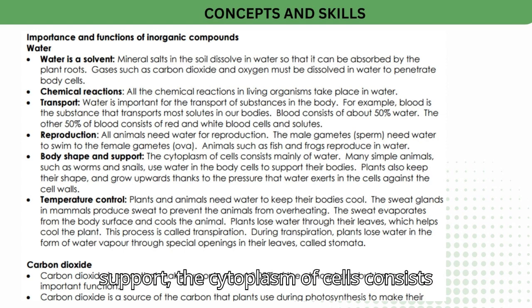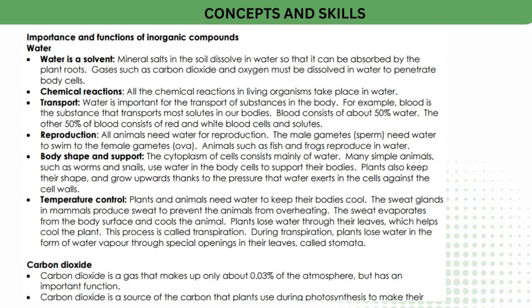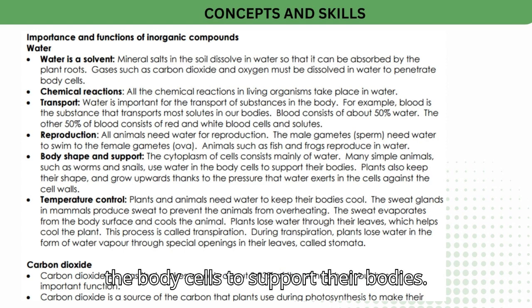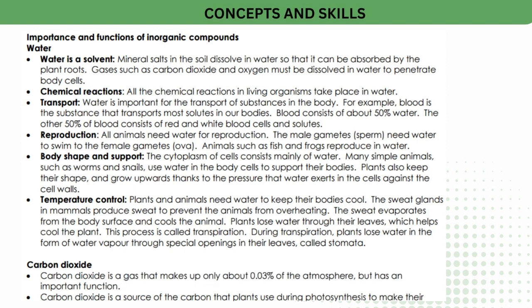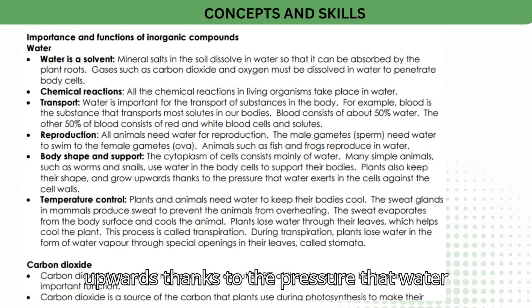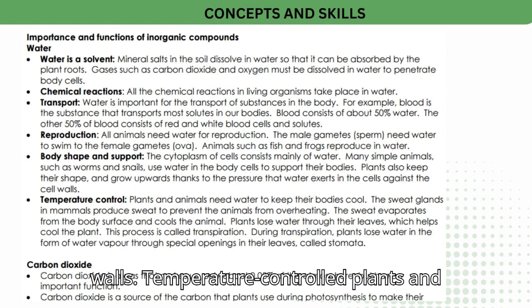Body shape and support: the cytoplasm of cells consists mainly of water. Many simple animals, such as worms and snails, use water in their body cells to support their bodies. Plants also keep their shape and grow upwards thanks to the pressure that water exerts in the cells against the cell walls.